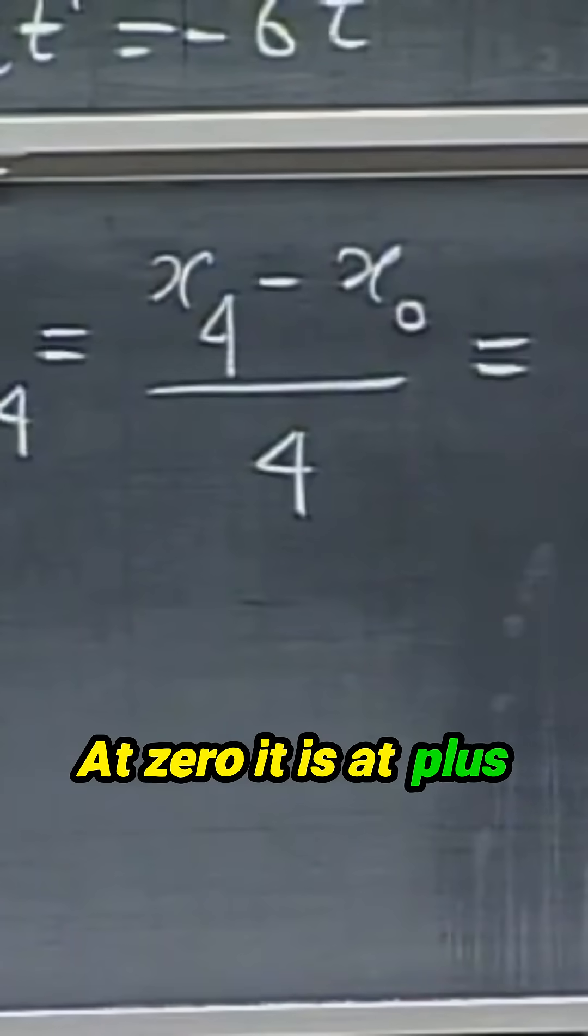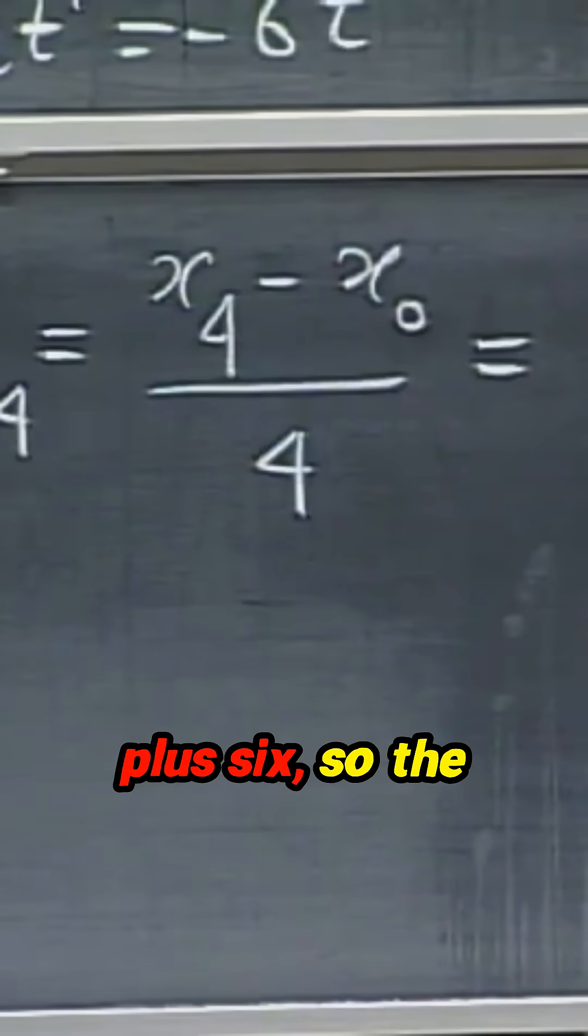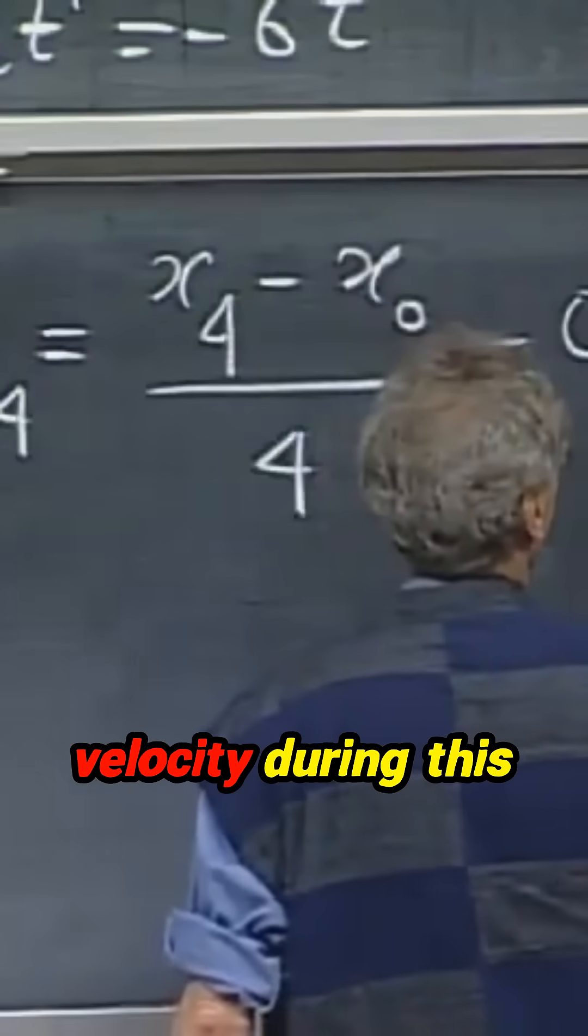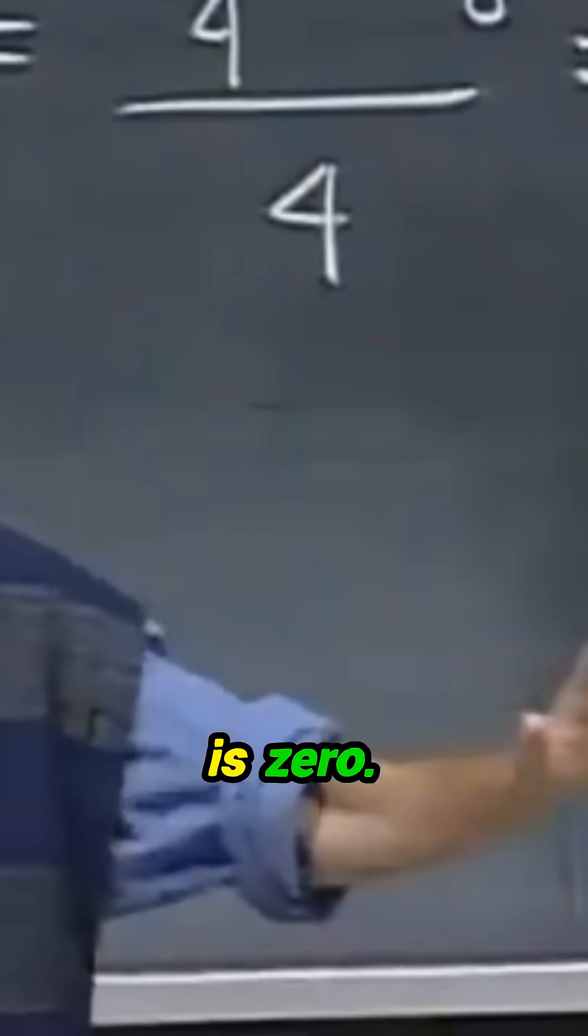At zero, it is at plus six. At four, it is at plus six. So the upstairs is zero. So the average velocity during this four-second trip is zero.